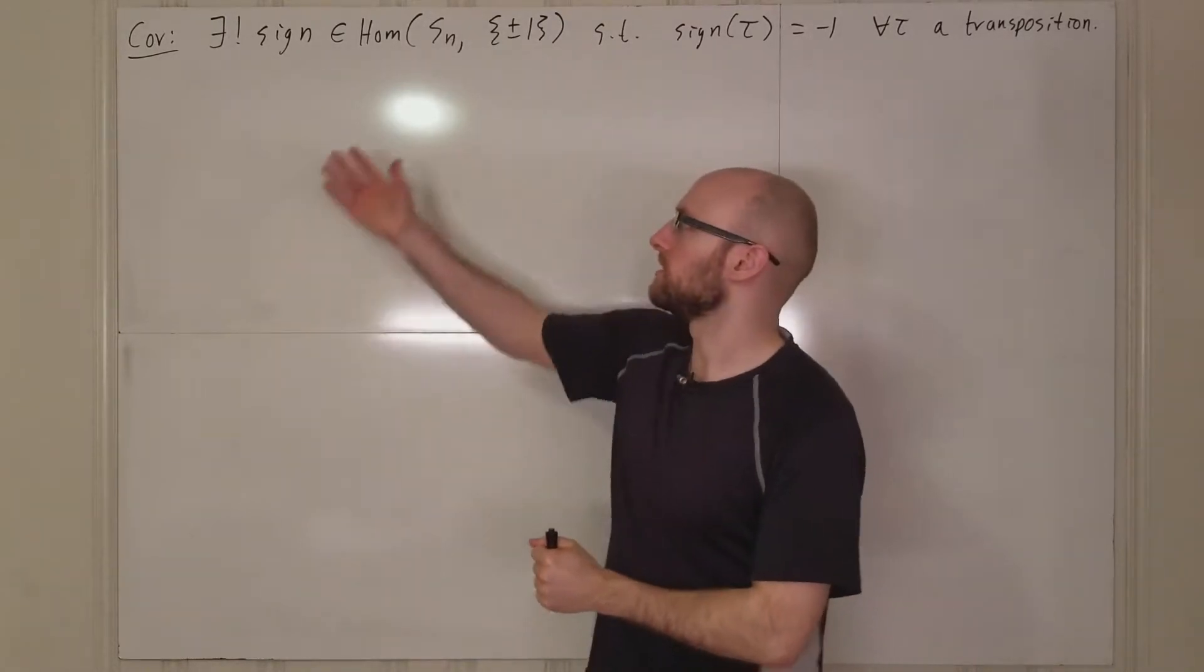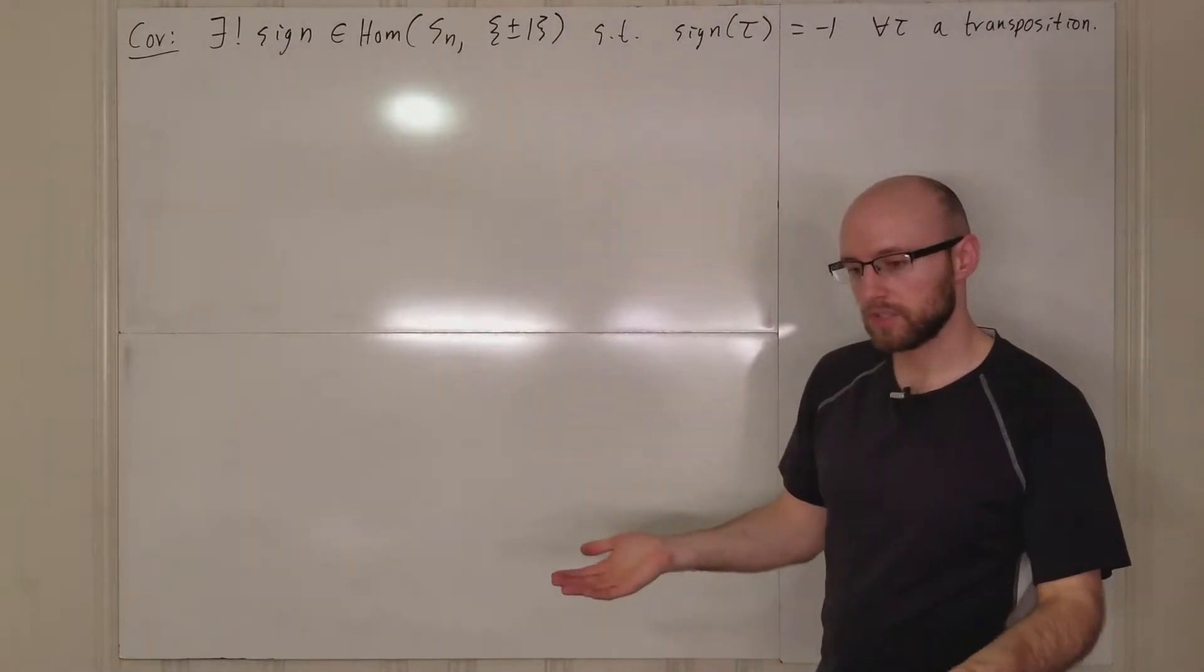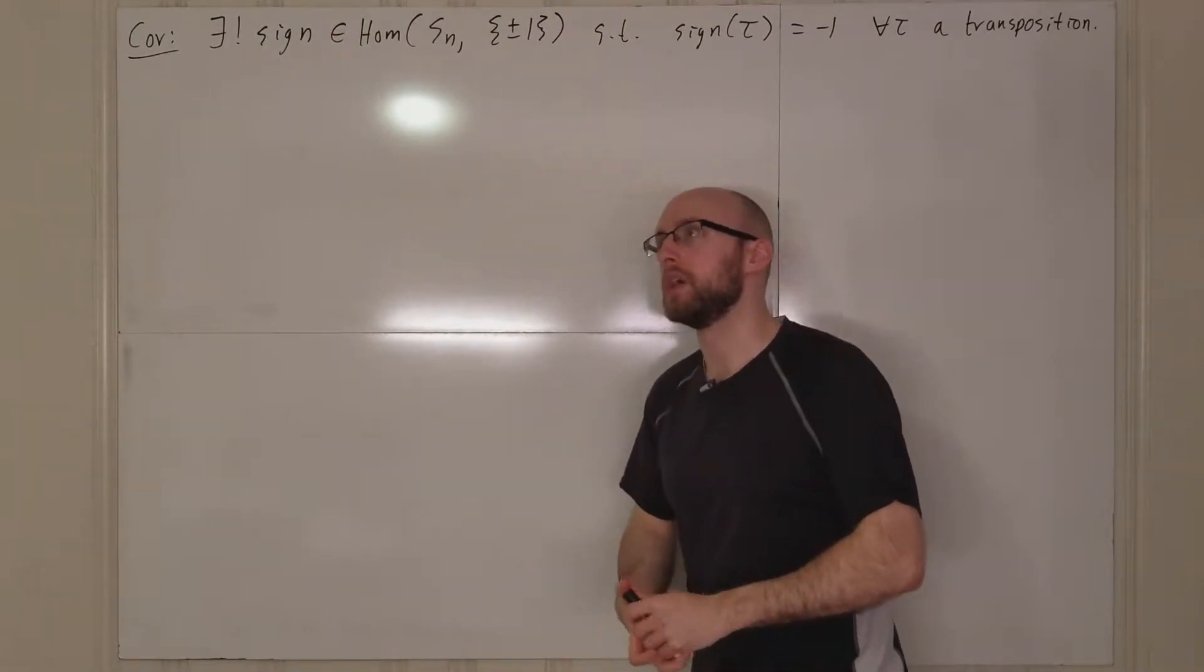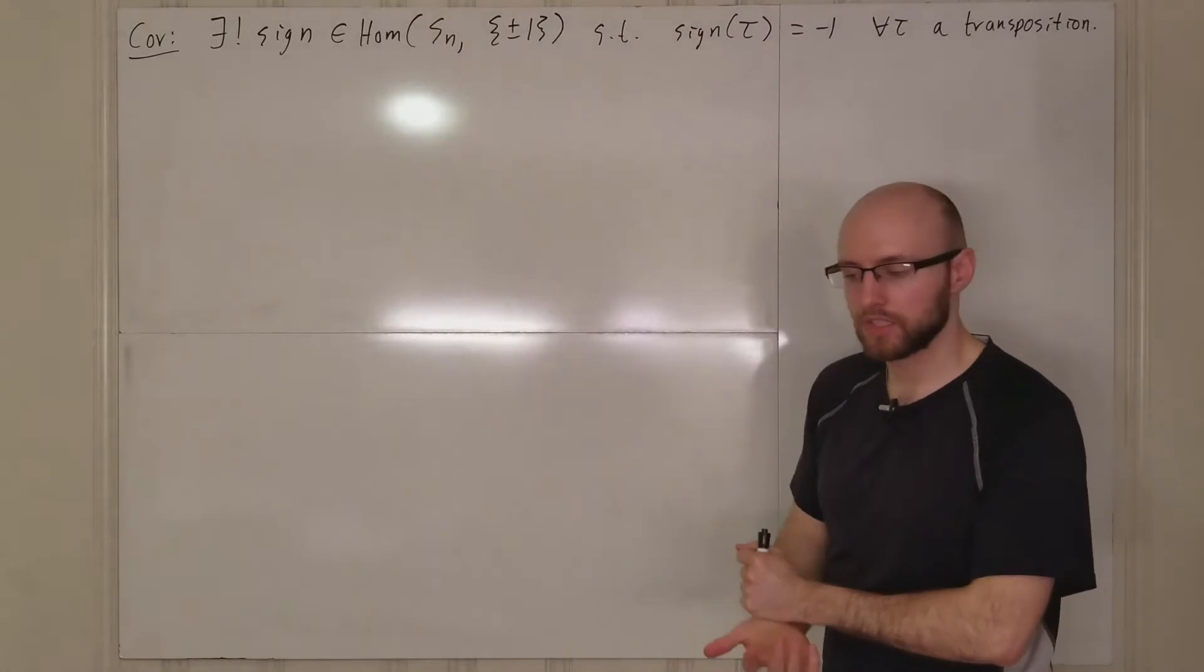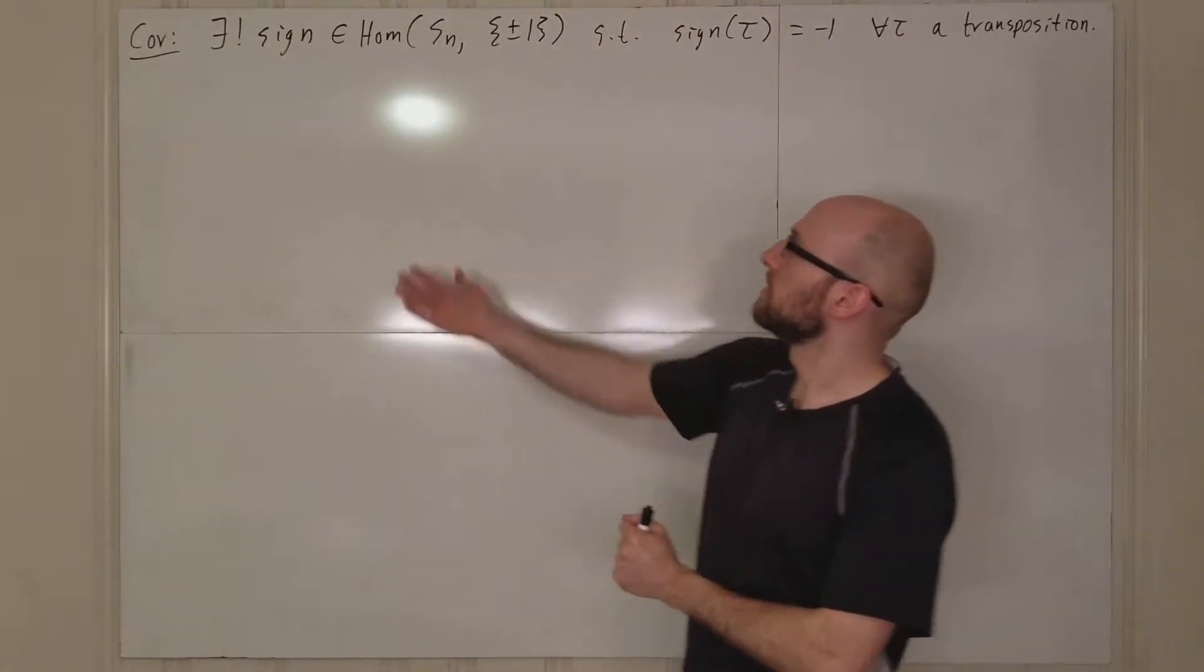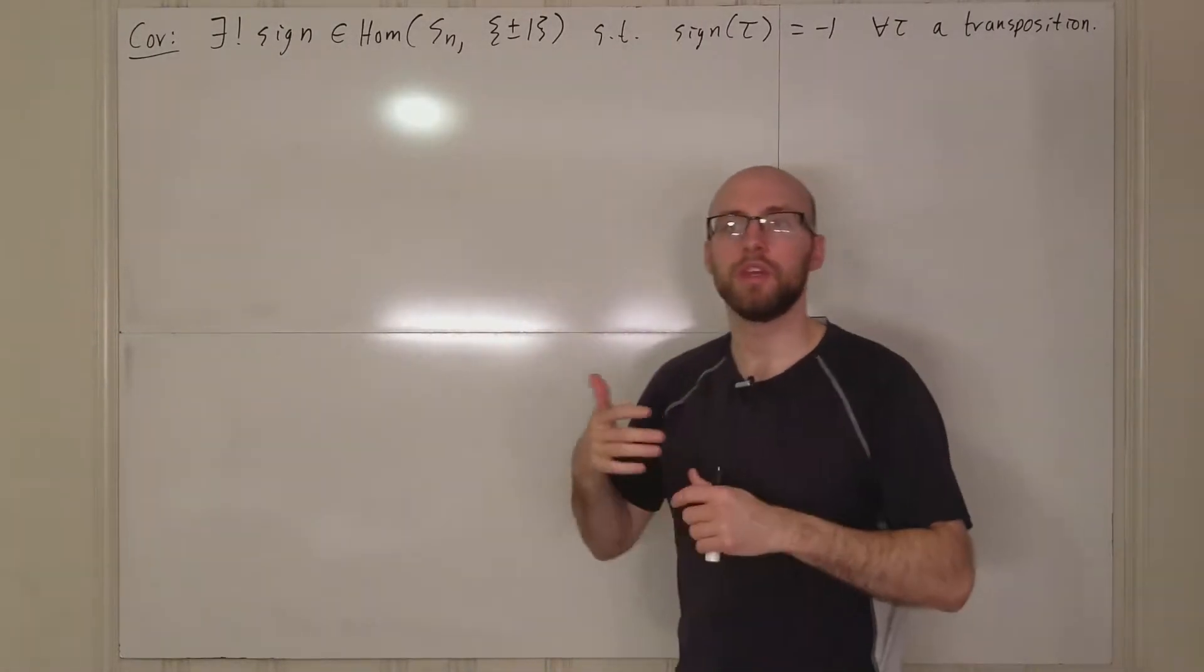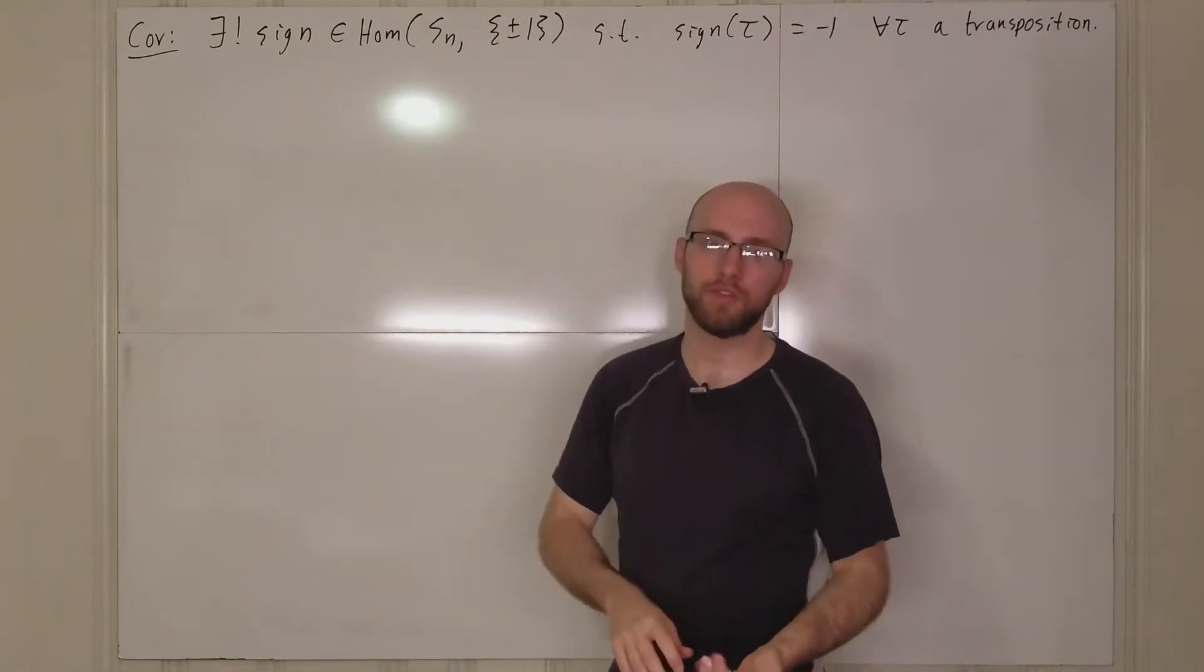And then using that this is a group homomorphism, if you've got two transpositions, then you get negative one times negative one, which is one. So basically, if you take a product of n transpositions, then the sign is going to be negative one to the power of n, which is going to be one if n is even and negative one if n is odd.